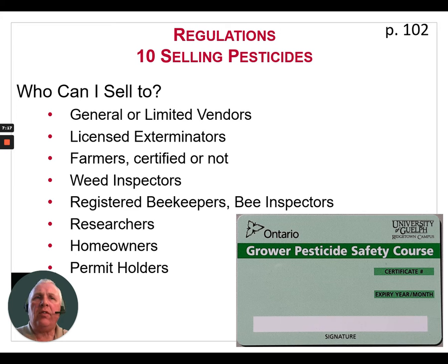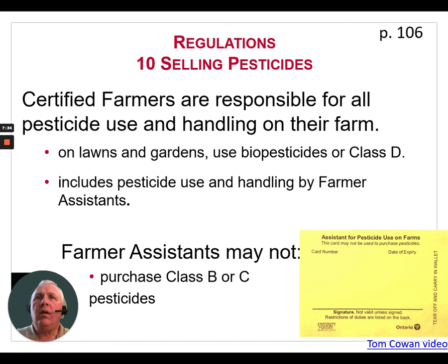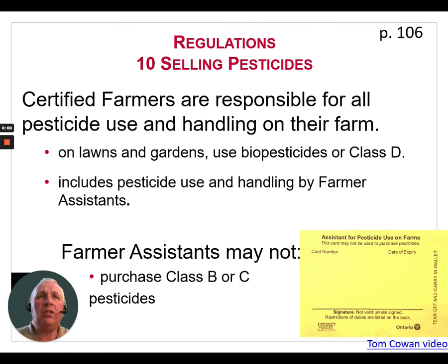An example of the Grower Pesticide Safety Course certification card is shown on the lower right of the screen. Certified farmers are responsible for all pesticide use and handling on their farm. This includes pesticides used on lawns and gardens, the use of bio-pesticides or Class D pesticides, and pesticides used and handled by farmer assistants. A farmer assistant may not purchase a Class B or C pesticide, but they are able to use them under the direction of a certified farmer. An assistant pesticide card is pictured on the lower right of the screen.